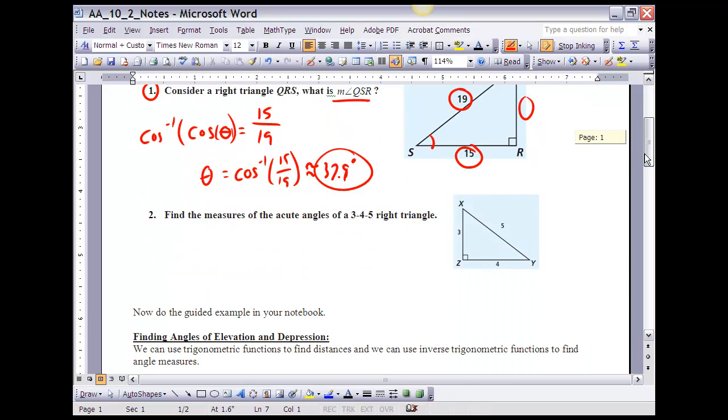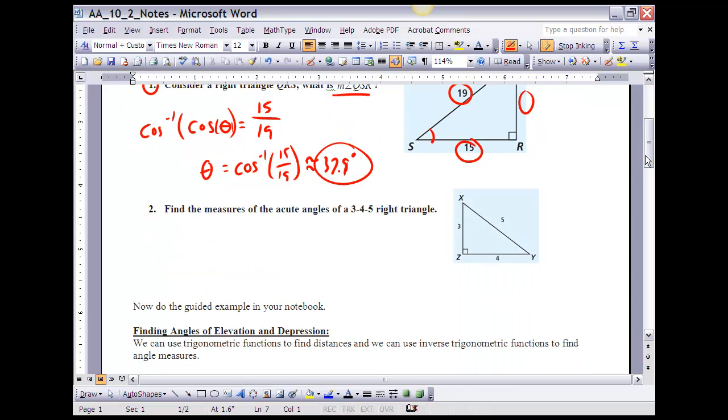As we look at number 2, it says find the measure of the acute angles of a 3, 4, 5 right triangle. So if I'm going to find the measures of the angles for the 3, 4, 5 right triangle, there's several ways that I can do it. I'm going to start by finding the measure of angle x here. To do that, I'm going to say, and like I said, I can use a lot of different things.